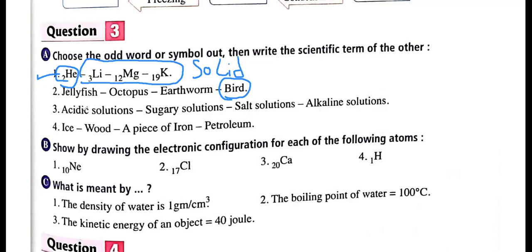Third group: acid solution, sugar solution, salt solution, and alkaline solution. The odd one is sugar solution because the rest are good conductors of electricity. Fourth group: ice, wood, a piece of iron, and petroleum. The odd one is a piece of iron because when you add ice, wood, or petroleum to water, all of them float. A piece of iron is the only material with more density than water, so all others have less density than water and will float.